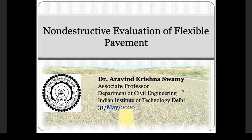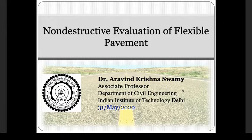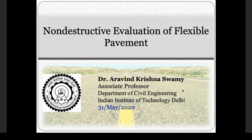If we take a pavement constructed today and monitor its performance over time, initially the surface is very smooth. Over time, due to repeated vehicular loading, changes occur in the microstructure of individual layers, leading to deterioration: cracks on surface, reorientation of aggregate, and compaction in underlying layers. The quality of the pavement on day one will not be there after two, three, or ten years.